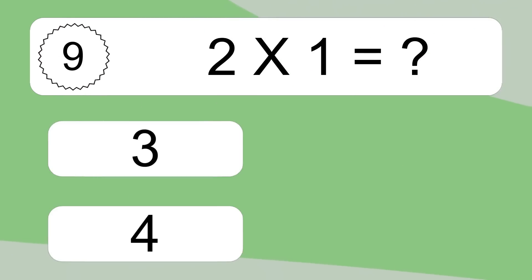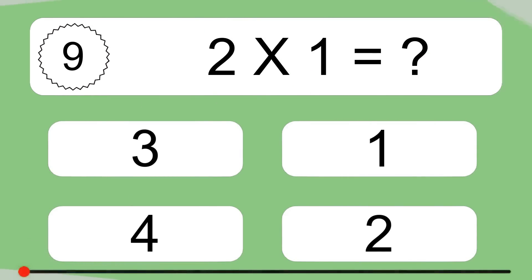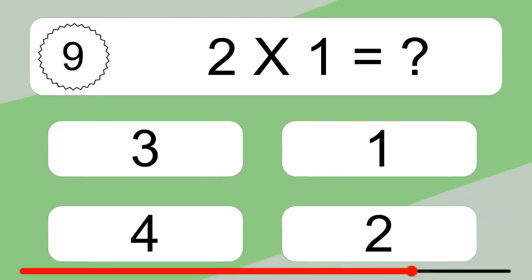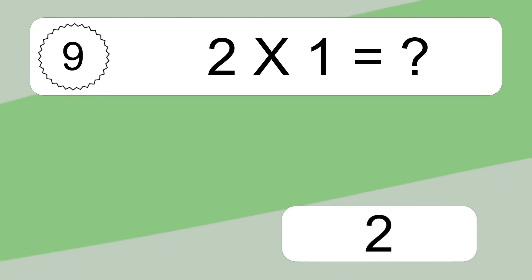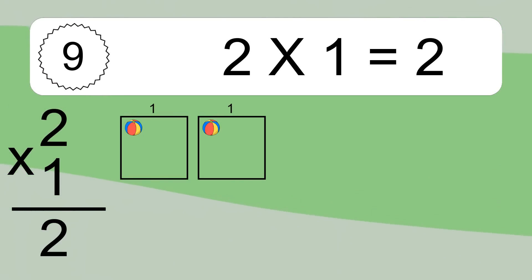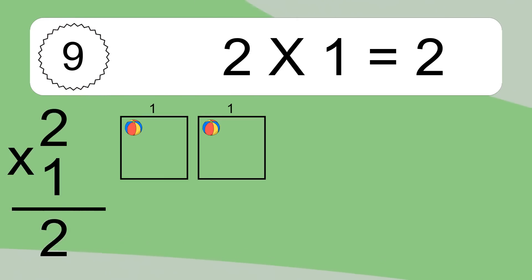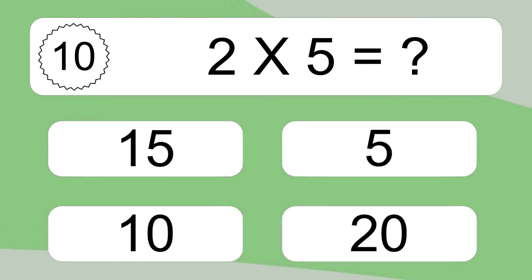2 times 1 equals what? 2 times 1 equals 2. We have 2 boxes and each box has 1 colorful ball inside. If you count all the balls in all the boxes together, you will have 2 times 1 balls. This equals 2 balls.